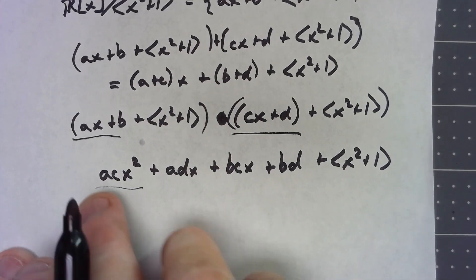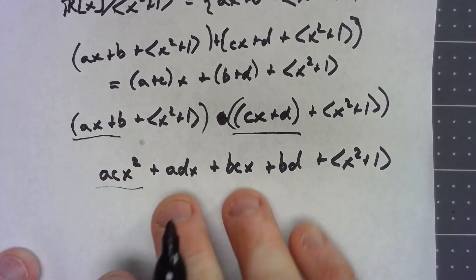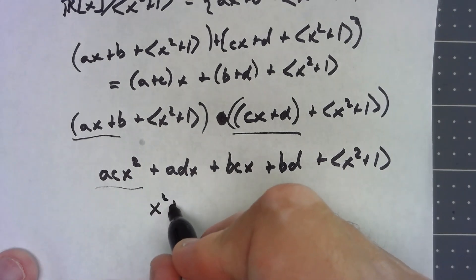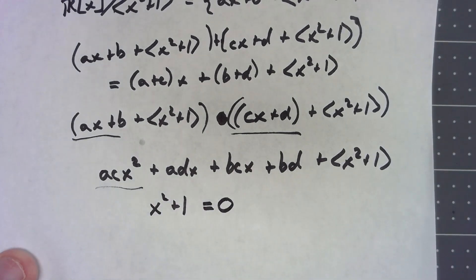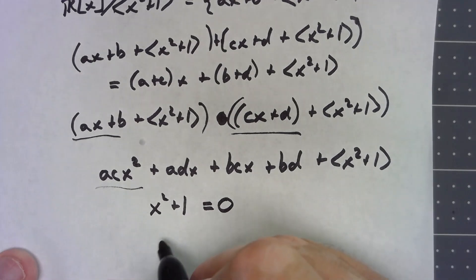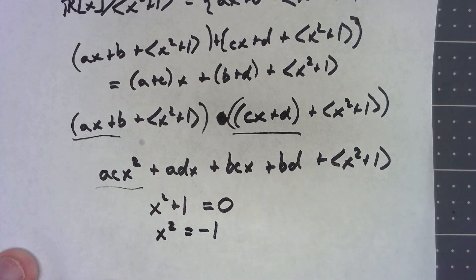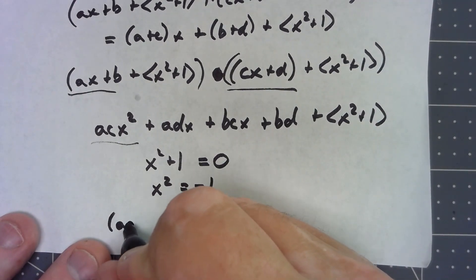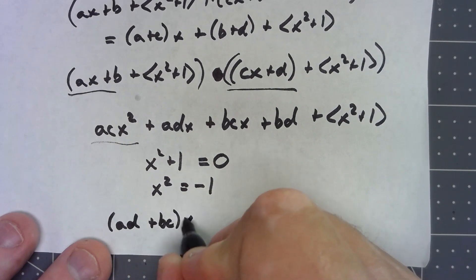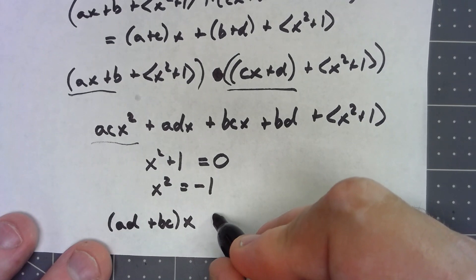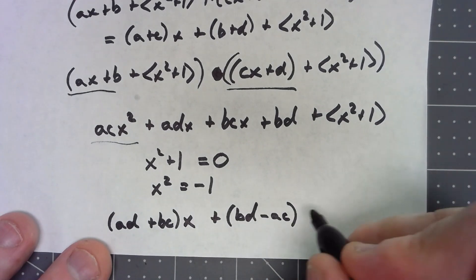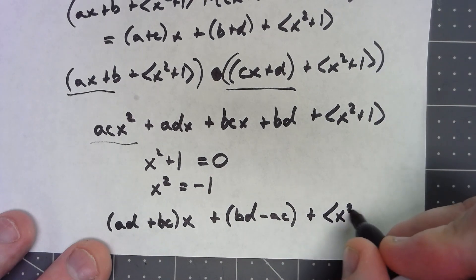We could do polynomial division, but let's think about it this way: x squared plus 1 is effectively our zero for the whole ring, which means x squared is the same thing as negative 1. So the product simplifies to ad plus bc times x plus bd minus ac, since x squared equals negative 1, plus the ideal generated by x squared plus 1.